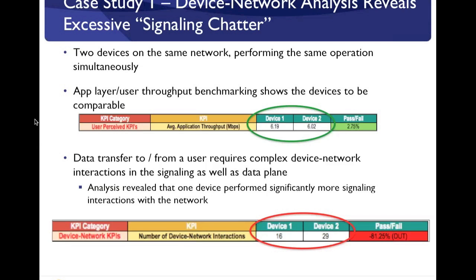The background for this case study: there are two devices. One was a reference device, and another — the device under test — was a flagship device about to be launched on the network. The goal was to compare these two devices to ensure the new device had comparable or better performance. We took a typical user experience application like YouTube and ran multiple YouTube downloads on both devices under the same network conditions at the same time — an apples-to-apples comparison — while also taking a holistic approach to all KPIs related to device network interaction.